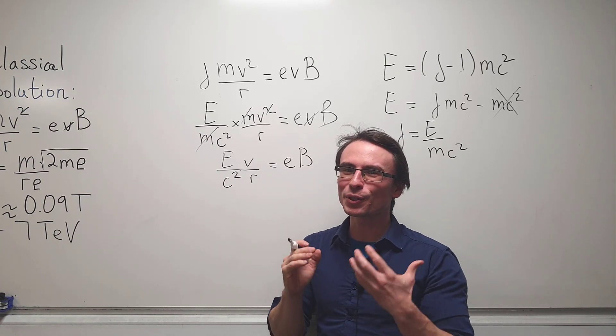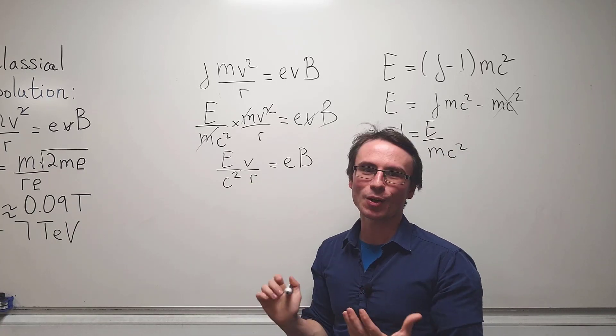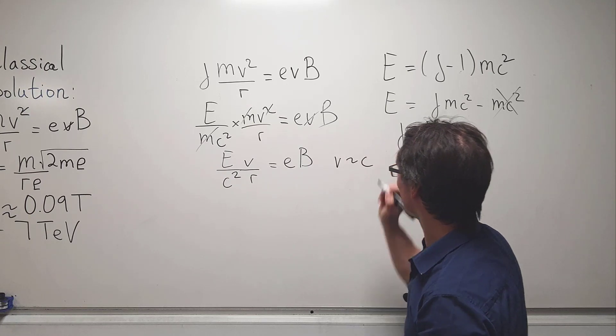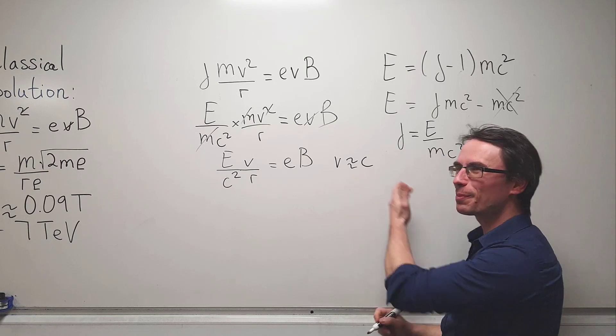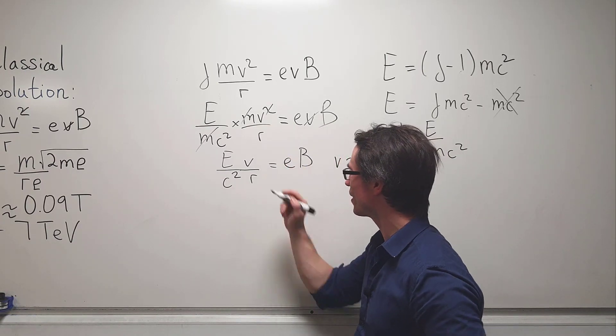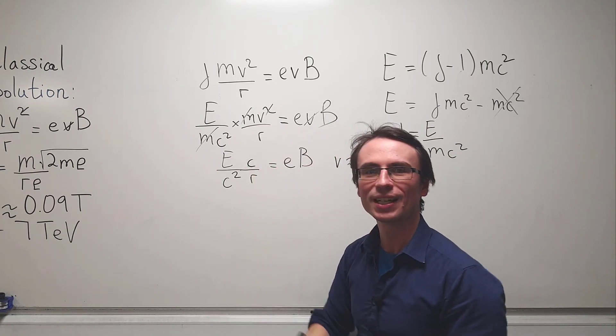Because in this question we're looking for a suitable approximation, as the protons are moving along the Large Hadron Collider, the speed is almost equal to the speed of light. So we can assume that v is approximately equal to c, which will allow us to simplify this expression further, and we can simply replace v with a factor of c.